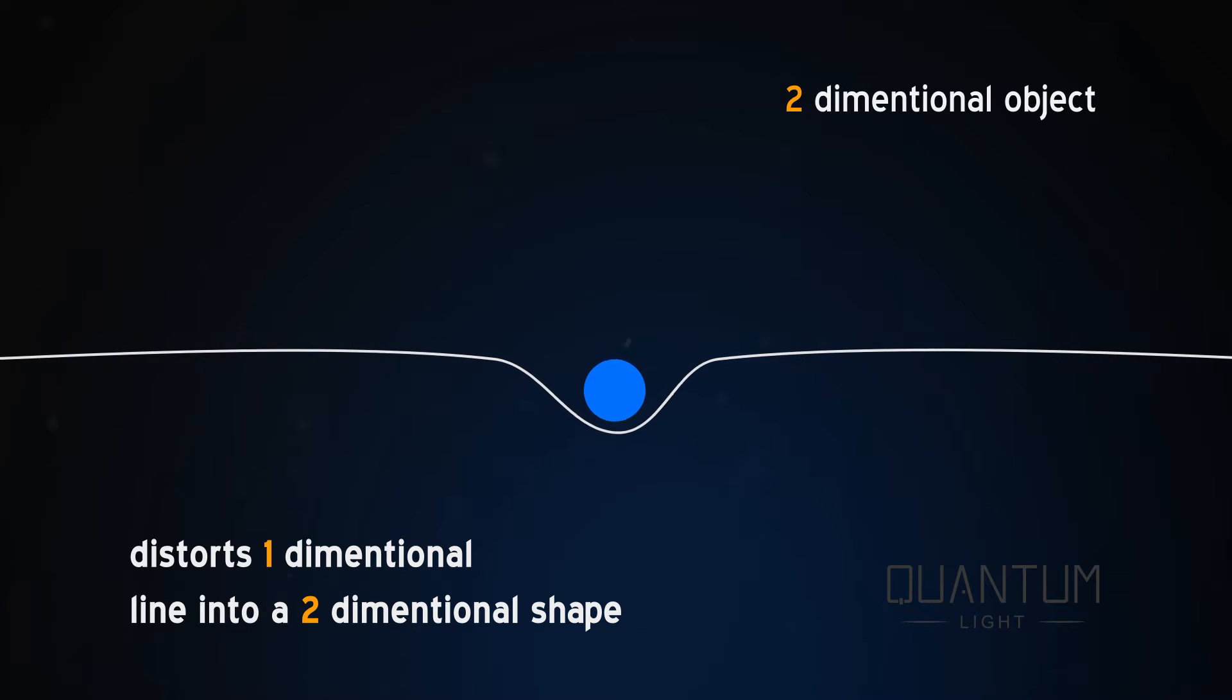To illustrate gravity, I place a circle above a line. As the circle distorts the one-dimensional line into a two-dimensional shape, anything on that line will tend to move toward the circle.